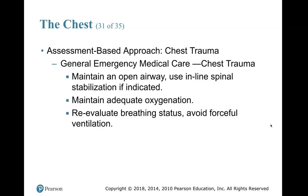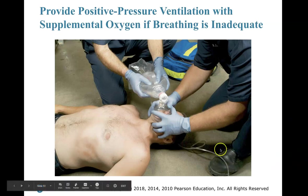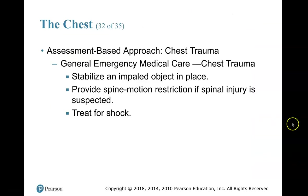General emergency medical care for chest trauma: maintain an open airway, use inline spinal stabilization if indicated, maintain adequate oxygenation, reevaluate breathing status, and avoid forceful ventilation. Provide positive pressure ventilation with supplemental oxygen when needed. Stabilize any impaled object in place — do not pull it out or push it in further unless it is directly compromising the airway. Provide spine motion restriction if spinal injury is suspected and treat for shock.